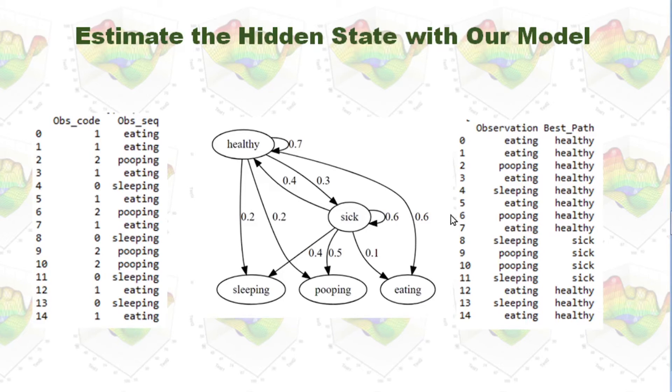And based on our model, we can get a result to say, okay, if the dog did those actions in this sequence. Most likely, until step seven, the dog is healthy.